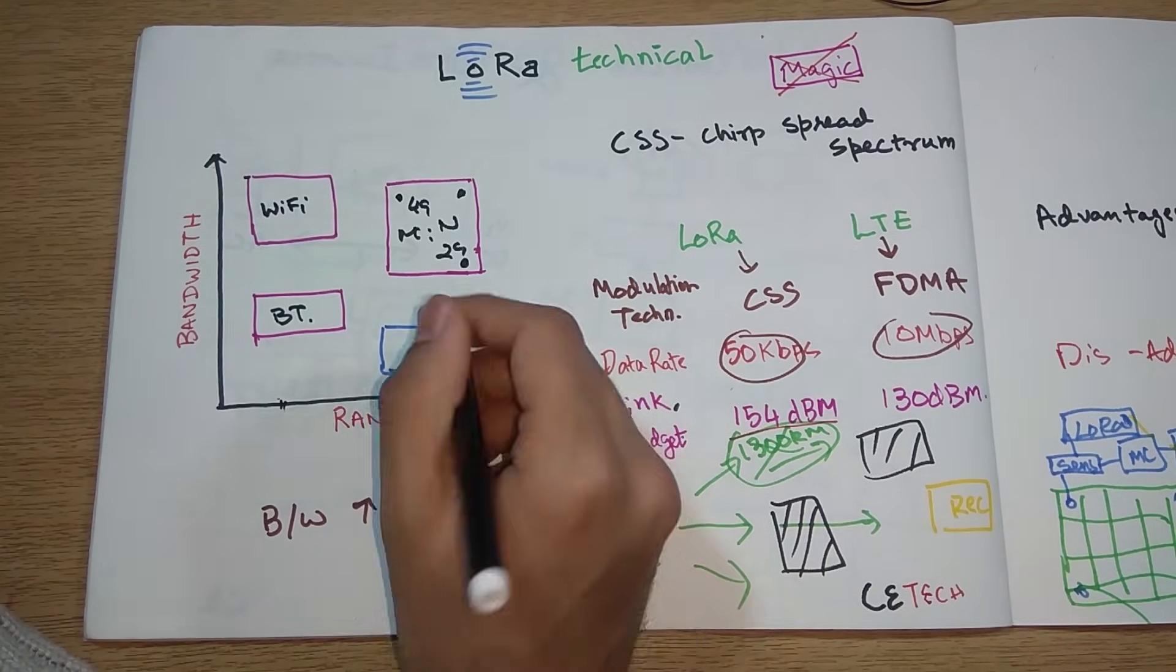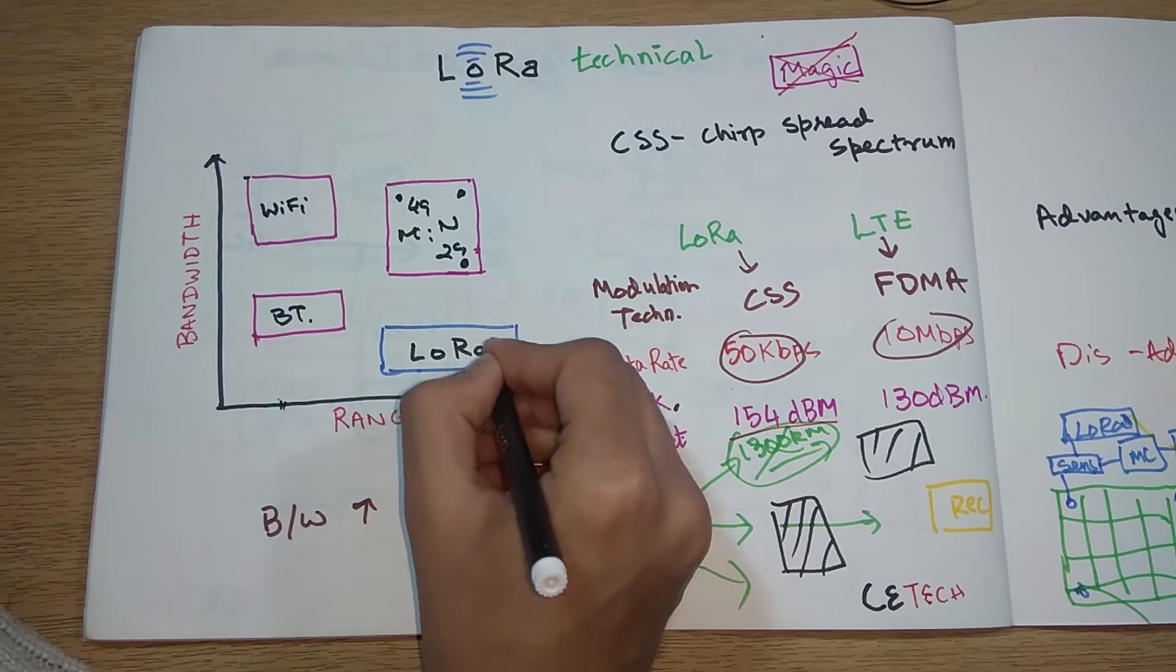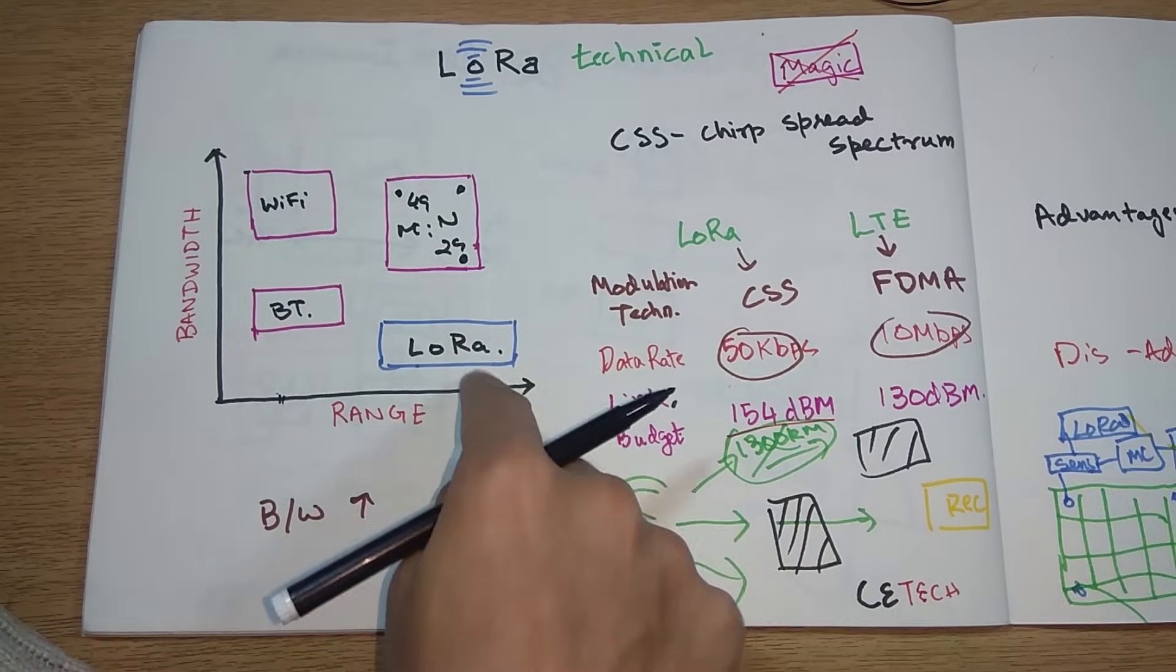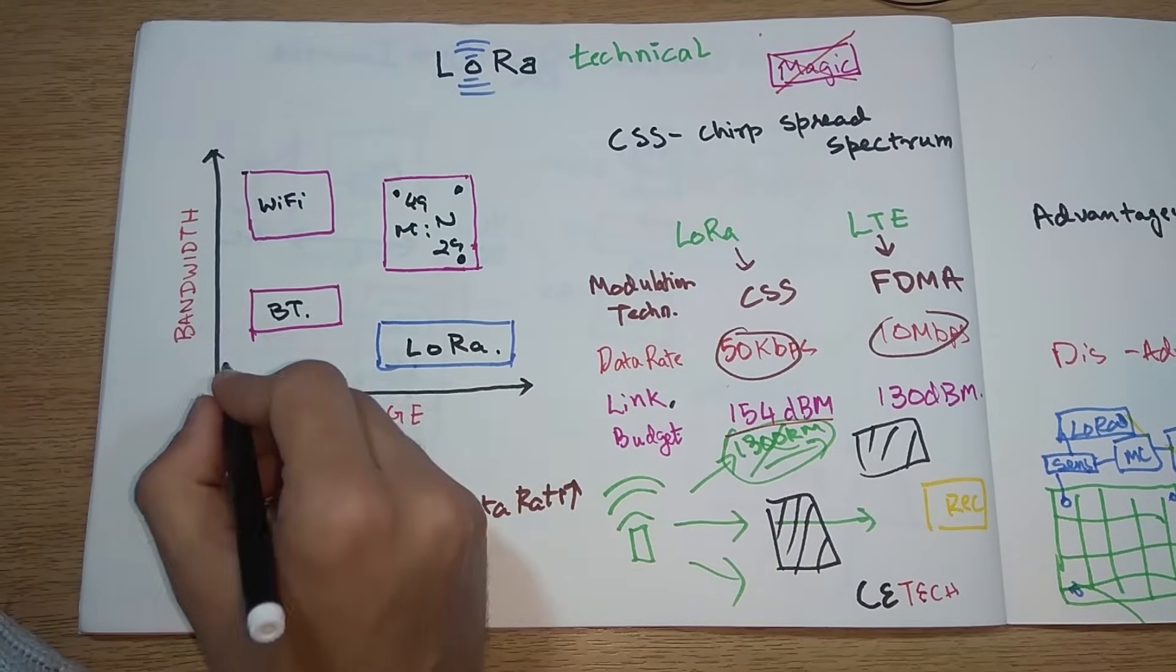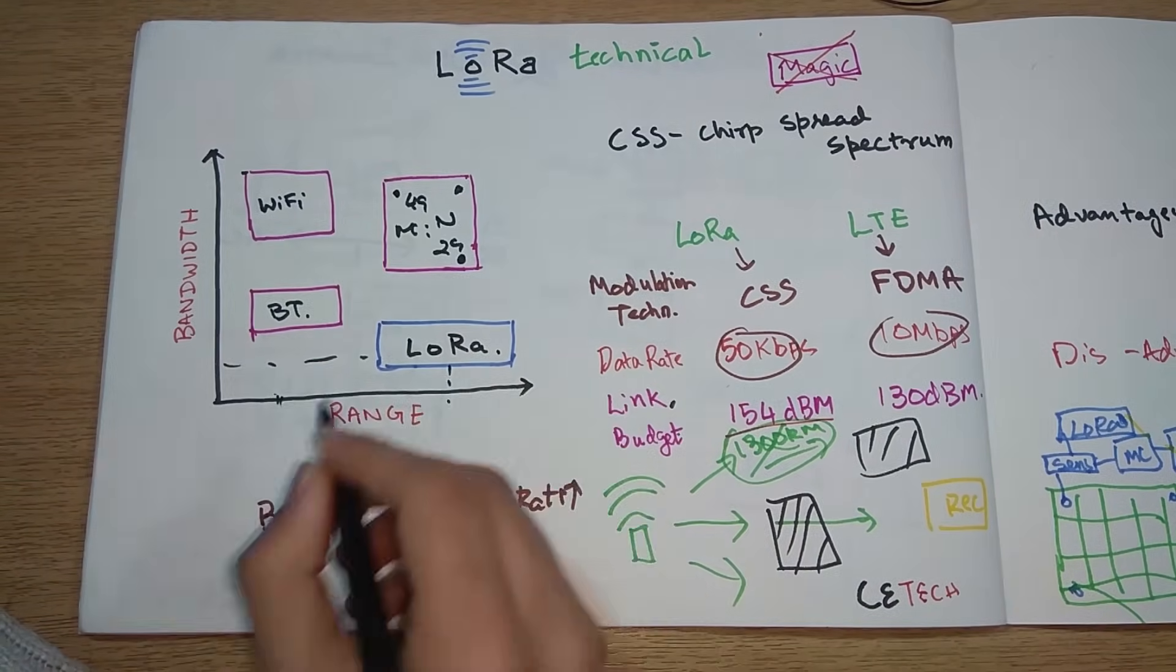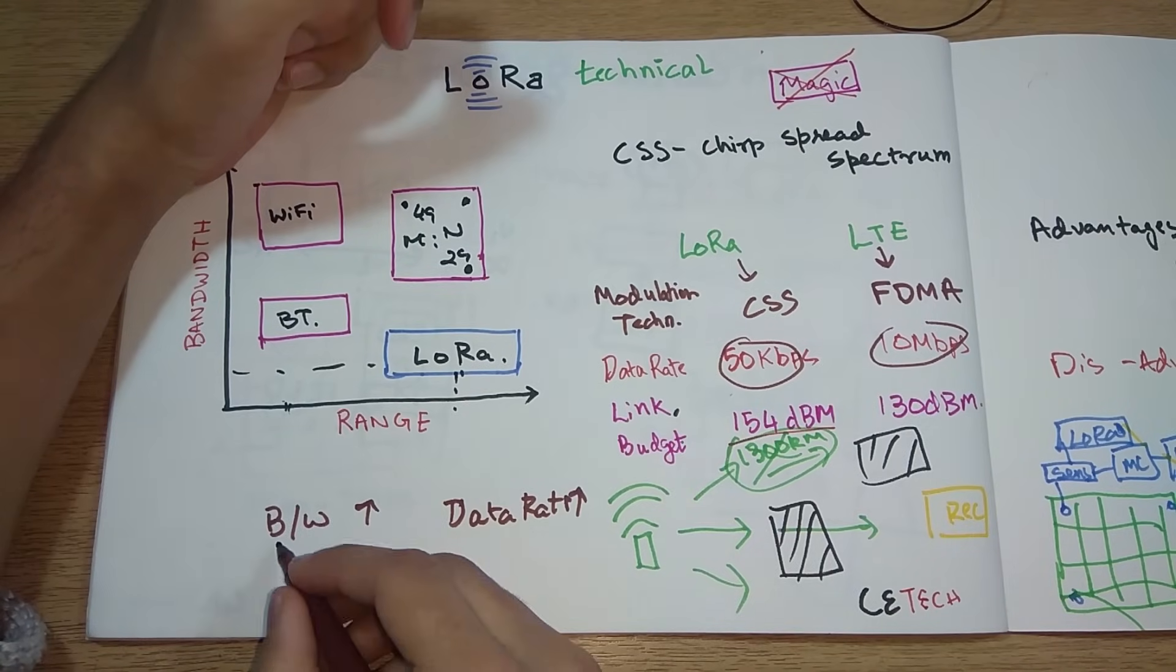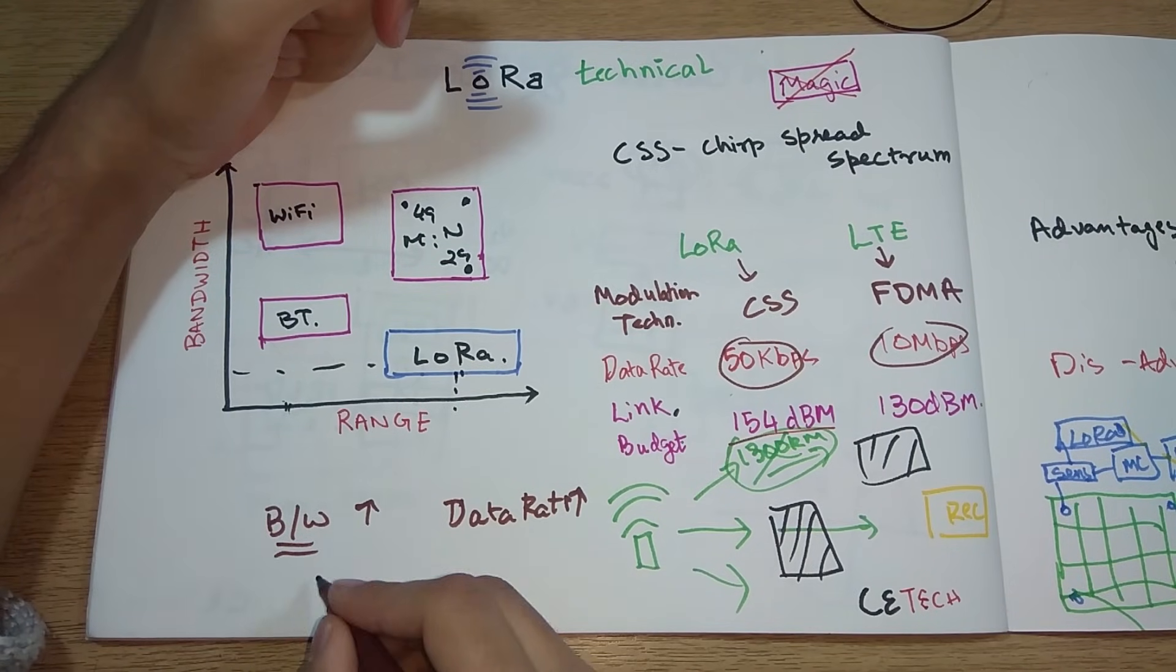This will be 4G, this will be 2G, and all mobile networks basically. But this box is the special box that we are studying about, this has LoRa in it. What LoRa can do is it can provide very high range but for a low bandwidth.